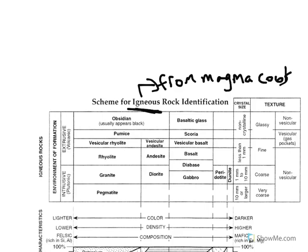Igneous rocks — there are two types. There are extrusive igneous rocks and there are intrusive igneous rocks. The word extrusive, you can see the word 'exit' in it — EX means out of. Extrusive igneous rocks form outside of the volcano, out of the volcano, meaning above ground.